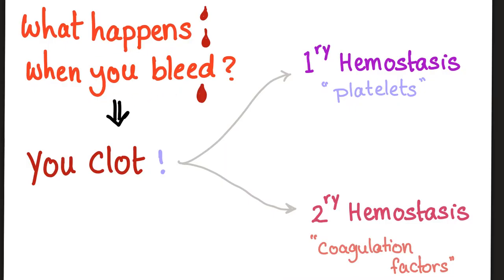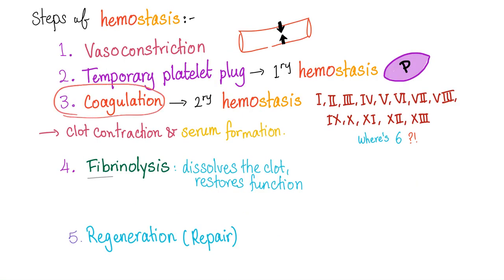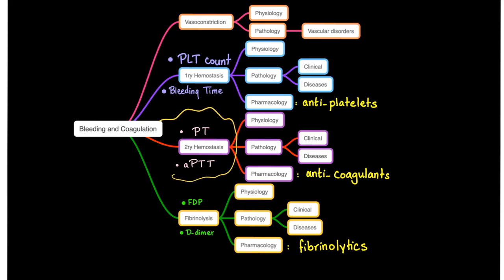Normally, when I bleed, I should clot via primary hemostasis — thank you, platelets — and secondary hemostasis — thank you, coagulation factors. But if I have hemophilia, I have problems with secondary hemostasis. So where is the problem? It's with coagulation factors: factor VIII in hemophilia A, factor IX in hemophilia B, and factor XI in hemophilia C. Hemophilia A and B are X-linked recessive — so think males — while hemophilia C is autosomal recessive, so think consanguinity.